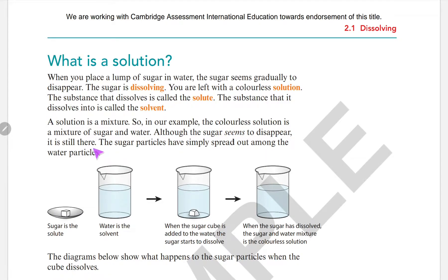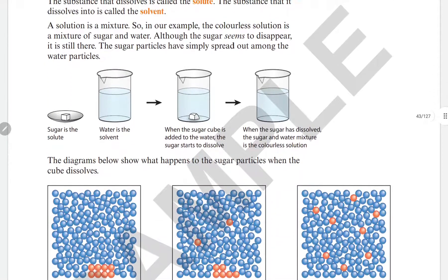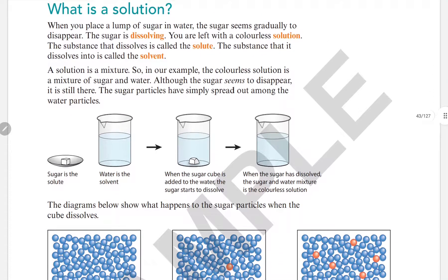In our example, the colorless solution is a mixture of sugar and water. Although the sugar seems to disappear, it is still there — the sugar particles have simply spread out among the water particles. So sugar is the solute and water is the solvent.